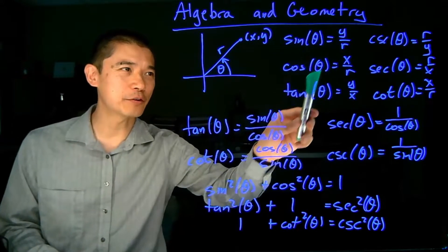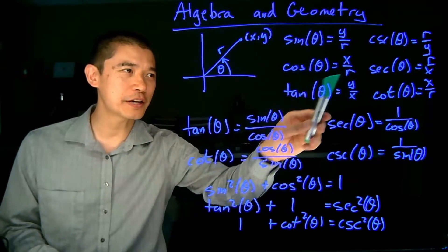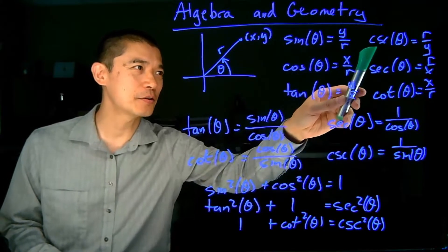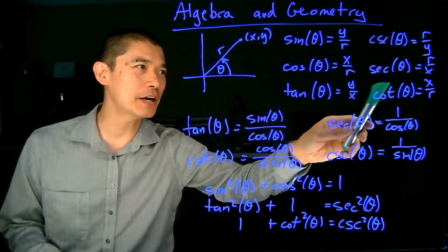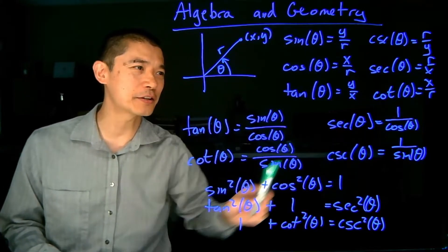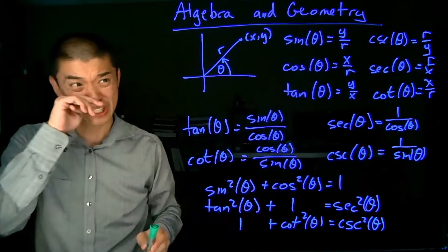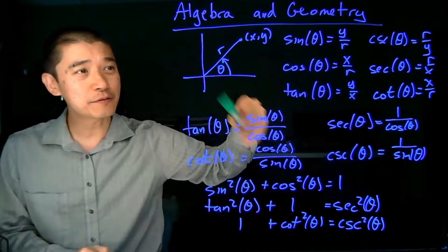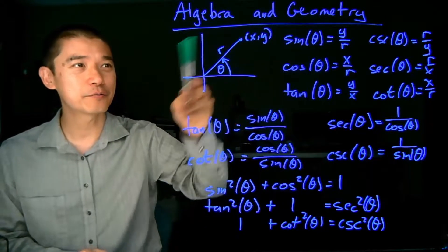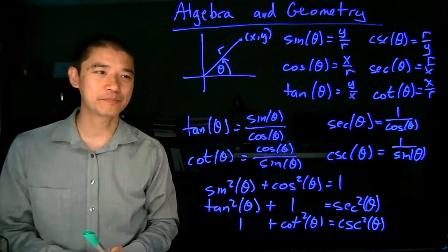Sine is y over r, cosine is x over r, tangent is y over x, cosecant is r over y, secant is r over x, and cotangent is x over y. All these functions are for the specific value of theta that we get from this diagram.